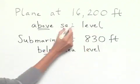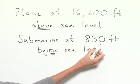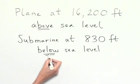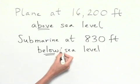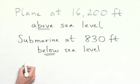We're going to use the 16,200 feet as a positive value and the 830 feet as a negative value because we're looking at below sea level here. So we think of this in relation to zero. This would be above zero, this would be below zero.